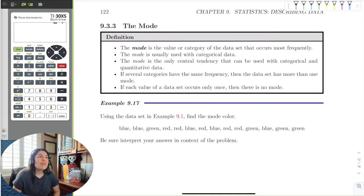The mode is just going to be the category or value that occurs most frequently. Mode is usually used with categorical data. It's not used too much when we're doing quantitative. The mode is the only central tendency that can be used with categorical or quantitative.